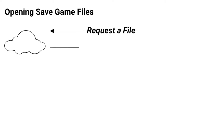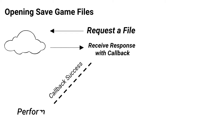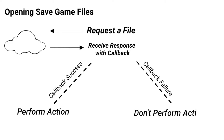This is useful when you need to know whether the previous action was successful before continuing. A good example will be the opening of saved game files with GPGS. Before we want to read and decode the file, we first need to make sure that the file actually exists, or we need to throw an error. That's really the most complex concept to grasp with Saved Games — the rest is just chaining callbacks together until you've extracted and loaded your data.